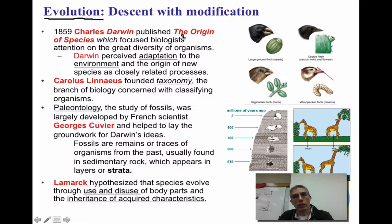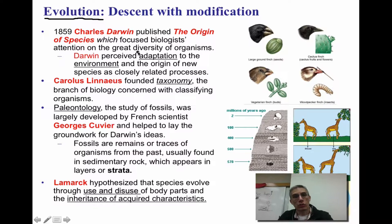Charles Darwin had actually published a book called The Origin of Species. What this book did for various scientists during the mid-1850s was focus their attention on the huge amount of diversity of organisms found on this planet. Darwin himself perceived adaptation or change to the environment and the origin of new species as very closely related processes.